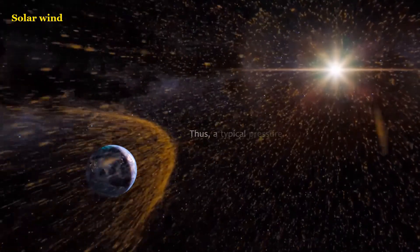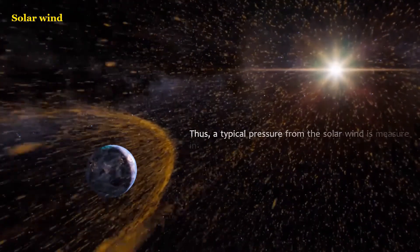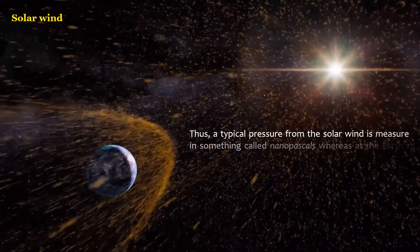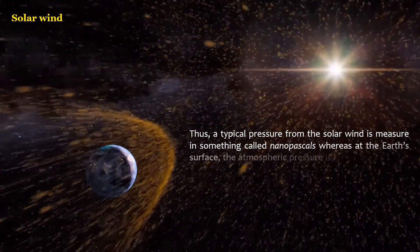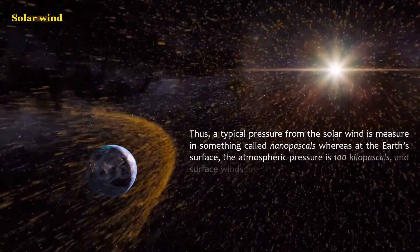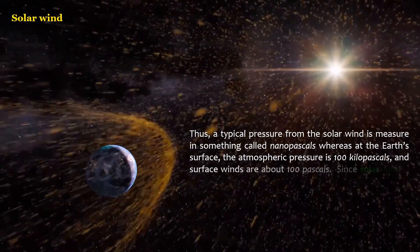Thus, a typical pressure from the solar wind is measured in nanopascals, whereas at the Earth's surface, the atmospheric pressure is 100 kilopascals, and surface winds are about 100 pascals.